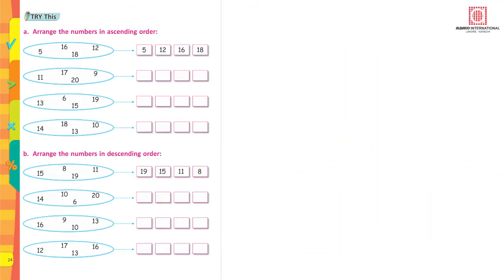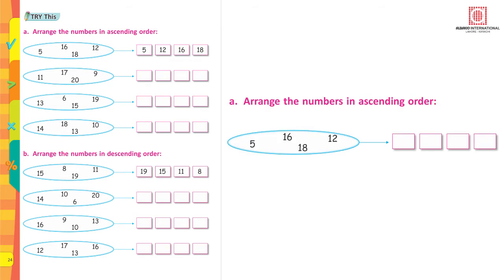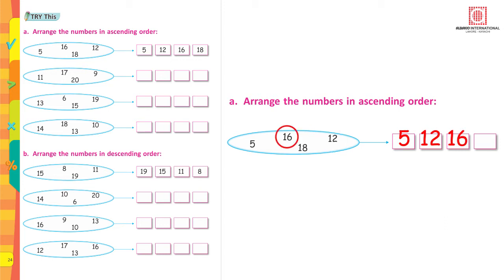Let's move on to page 24. As you know, we had already done arranging the numbers in ascending order. Ascending means moving from the smaller to the bigger number — climbing up the stairs, from smaller to bigger. Four numbers are given here: 5, 16, 18, 12. The first one has been done for you. Pick out the smallest number out of these four. Which is the smallest number? 5 — that comes in the first box. Then 12, then 16. And which is the greatest number? 18 — that comes in the end.